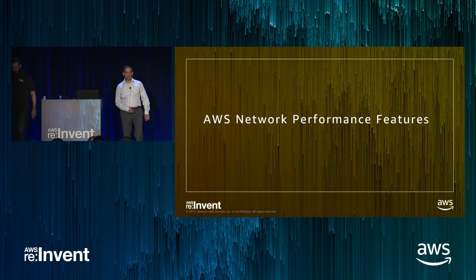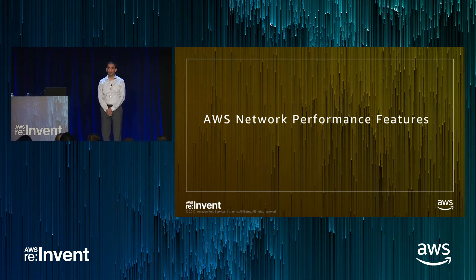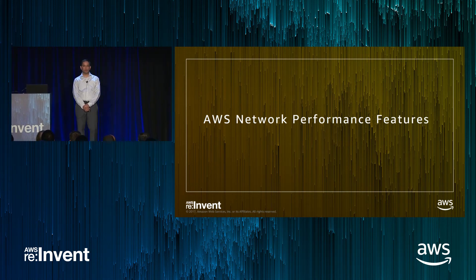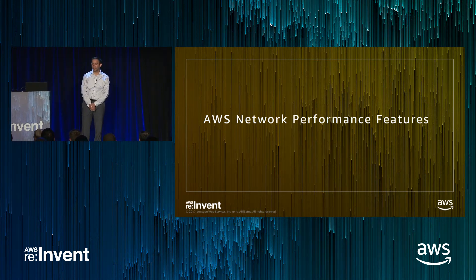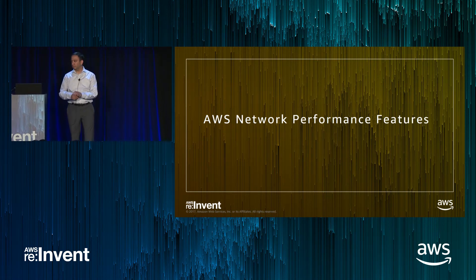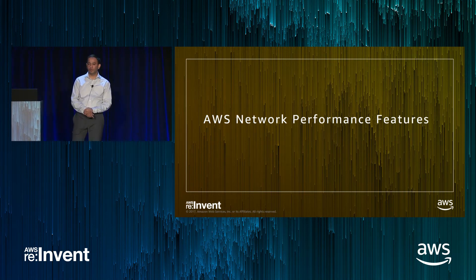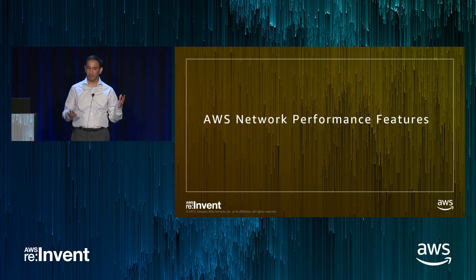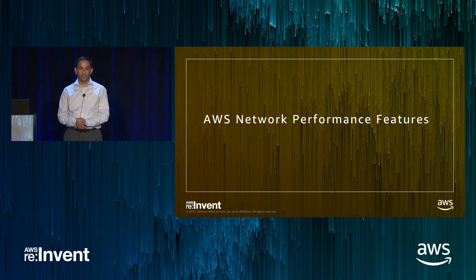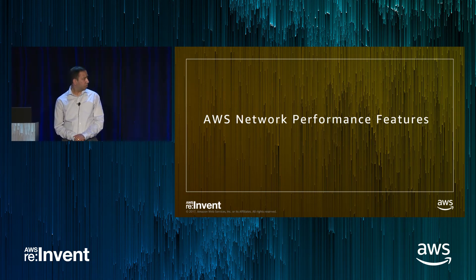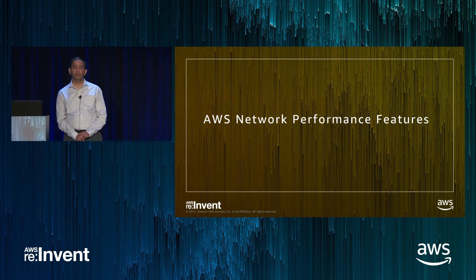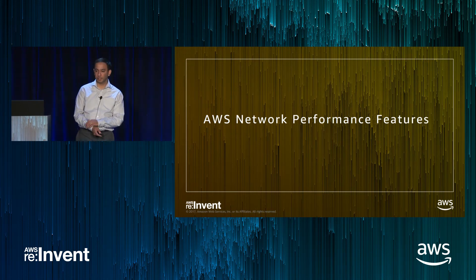I'm a senior product manager at EC2 responsible for instance networking and network performance. Nick gave an overview of general networking and how to improve performance through tuning. I want to go into more detail on what you can do specifically on EC2 to substantially improve your network performance.